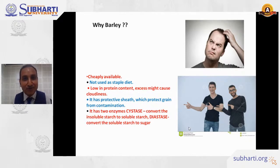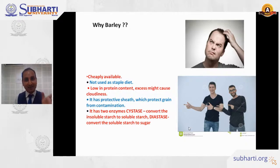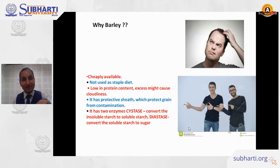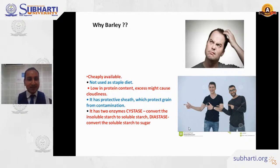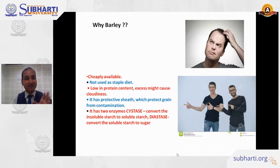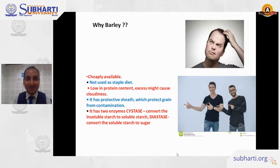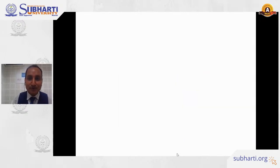Barley contains two important enzymes: cytase and diastase. These enzymes are critical — they make the starch soluble in water. Cytase converts insoluble starch into soluble starch, and diastase then converts that soluble starch into simpler forms of sugar. These are the reasons we use barley for making beer.